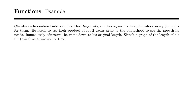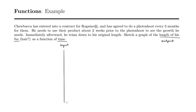We're going to sketch a graph of the length of his hair as a function of time. So length of his fur is our output, and time is our input. We're going to go ahead and sketch a graph here — just quick axes. Time starts at zero. Here's our time axis and here's our length axis.